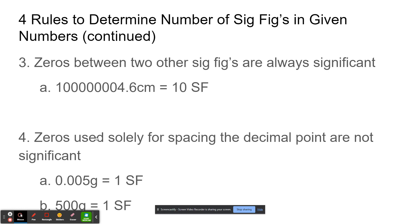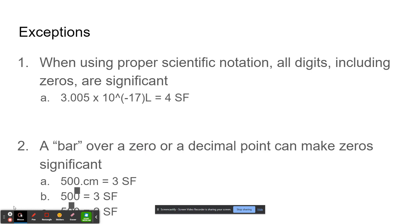So those zeros would all count as sig figs, and this number would actually have ten sig figs. And as I said, zeros used solely for spacing the decimal point are not significant. So 0.005 — those zeros are solely used to space the five away from the decimal point, so we only have one sig fig. And 500 grams would also only have one.